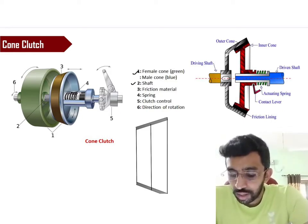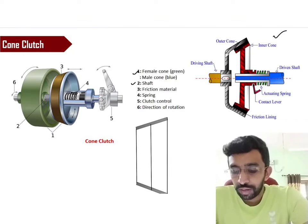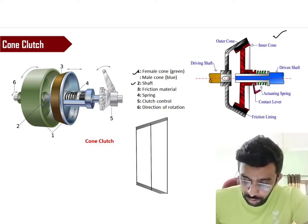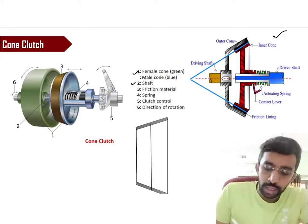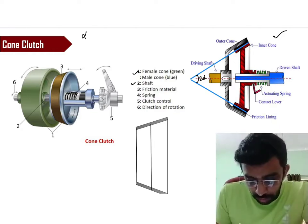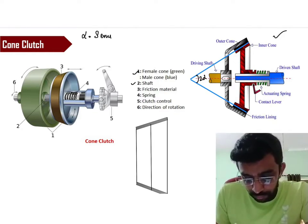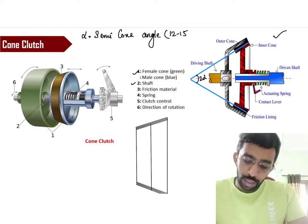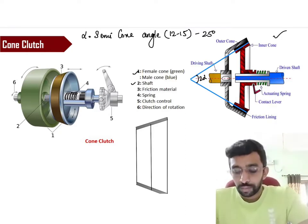This is the schematic diagram which is given here. We have an outer cone, inner cone, everything is given. Activating spring, everything is the same, there is no change. Along with this, I need to add one more thing, which is these two things. This angle is called as 2α, where α is called as the semi cone angle. And the range is usually 12 to 15, sometimes it can go up to 25 degrees also.